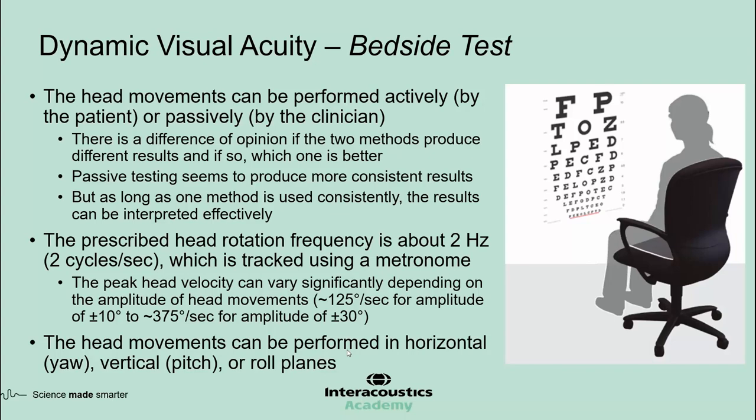The problem is that the input to the vestibular system is head velocity, not frequency. So the peak velocity can vary significantly depending on the amplitude of head movements. For example, moving the head at plus or minus 10 degrees yields a peak velocity of about 125 degrees per second, whereas moving at plus or minus 30 degrees yields a peak velocity closer to 375 degrees per second. DVA testing can be performed in the horizontal or yaw plane, the vertical or pitch plane, and in the roll plane.